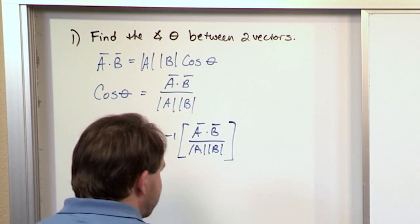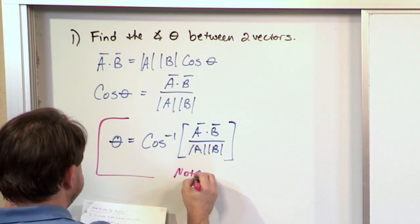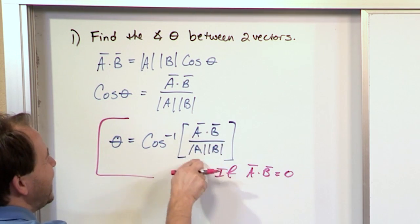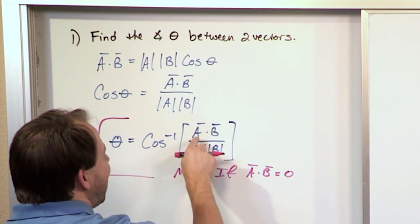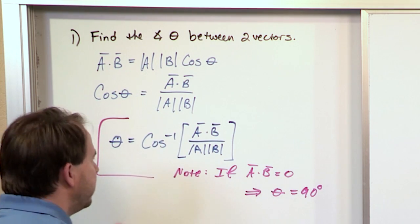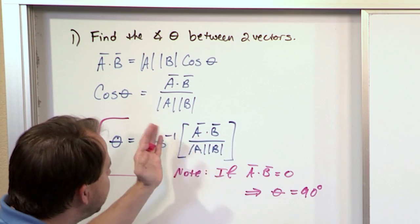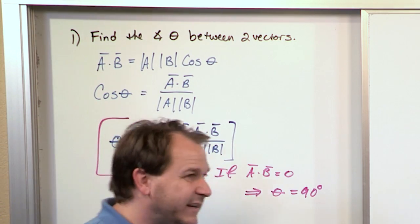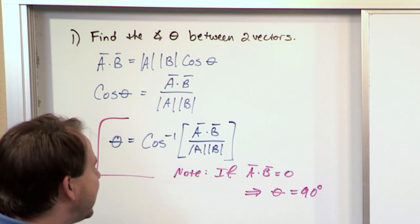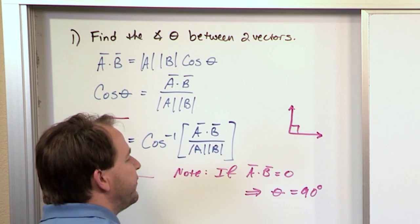One important note: if the dot product between the two vectors is zero — in other words, when you calculate A dot B and you get zero — then the angle returned will be 90 degrees. If you get a dot product of zero, you have zero on top, and zero divided by anything is zero. The inverse cosine of zero is 90 degrees. So if A dot B equals zero, you return 90 degrees.